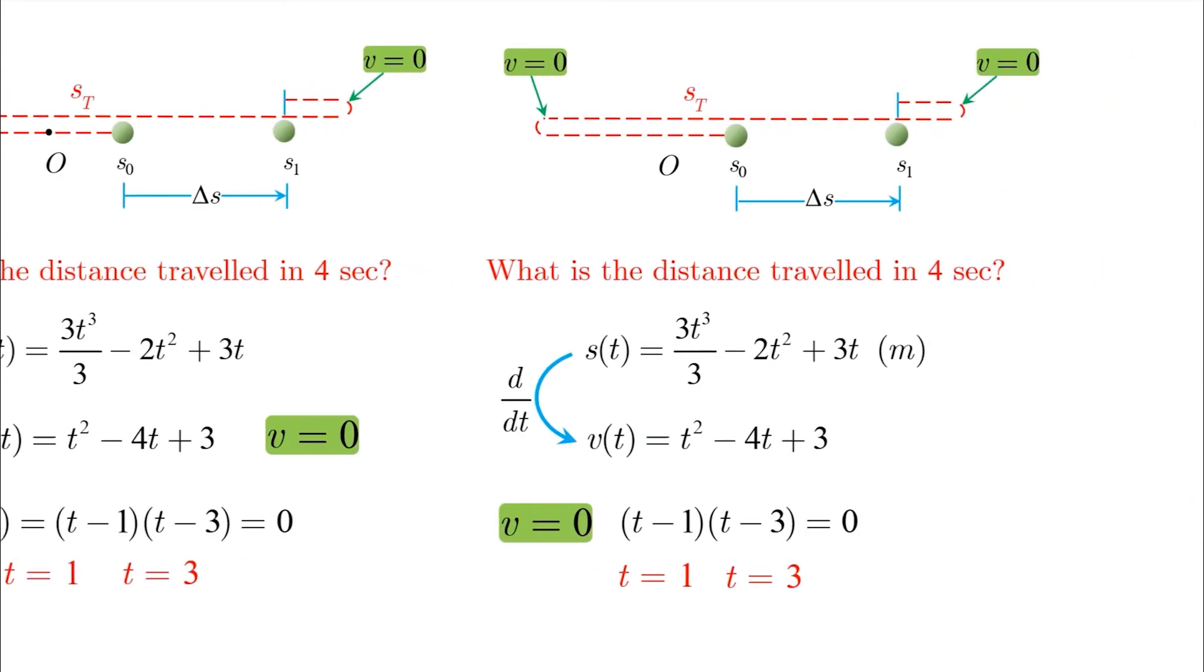And now we have four times of interest. The initial time when the stopwatch starts t equals zero, the first turnaround point t equals one, the second turnaround point t equals three, and the final time requested by the question, which is t equals four. Note that the final time is after t equals one and t equals three, and that's why we included both times in our solution.